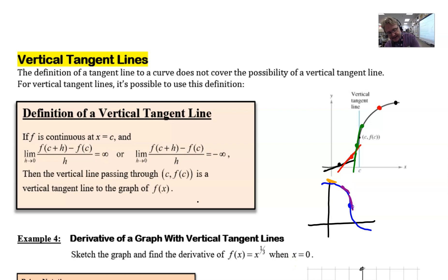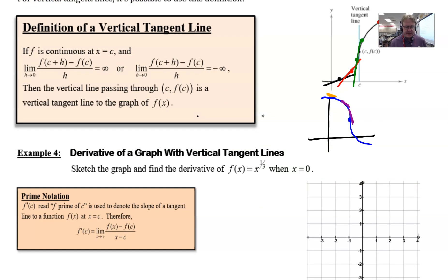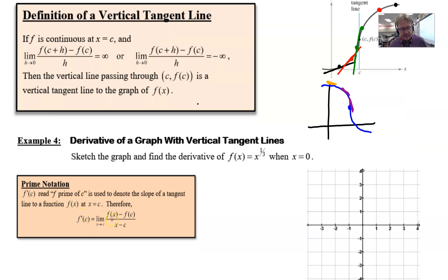So how do we manifest this with a specific example? We have in Example 4 to sketch the graph and find the derivative of a very unique function, f(x) equals x to the one-third, maybe something we don't graph a whole lot, and we want to do so when x is zero.